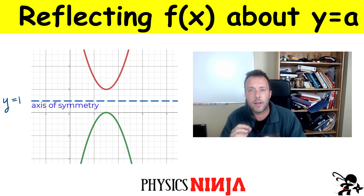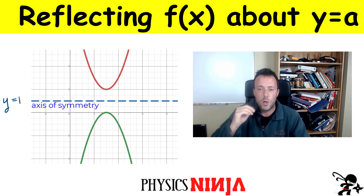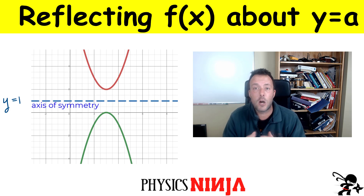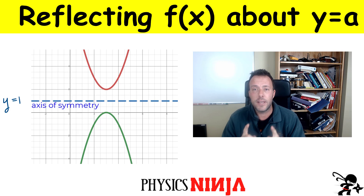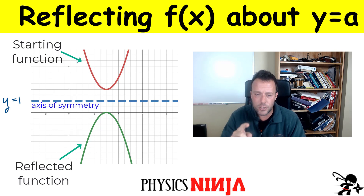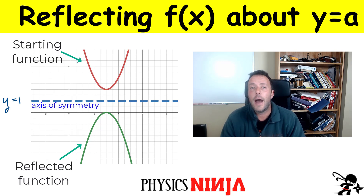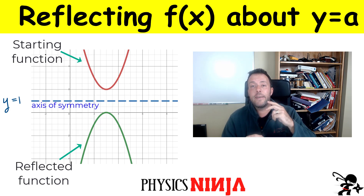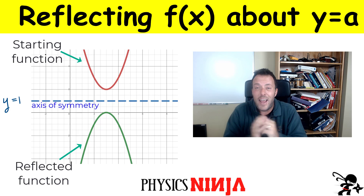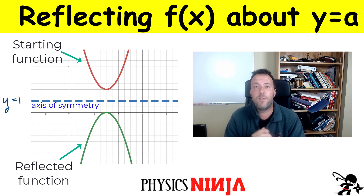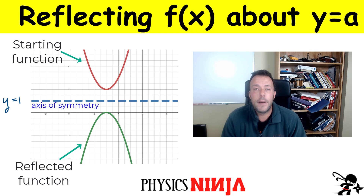What is the mathematical approach that you would use to reflect a function about an arbitrary axis? We're going to start with a simple function — a parabola — and illustrate the case shown in the figure. Then we'll write down a general formula that should work for any function f of x, and finally test that approach on a more complicated function.